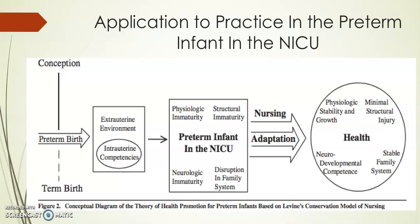Looking at the preterm infant in the NICU, they can have physiological immaturity which causes a threat to balance of energy. For example, the lungs of a preterm infant are one of the final organs to reach maturity, so preterm infants can have inadequate production of surfactant and structural inadequacy of lung tissue. There is also structural immaturity which can threaten structural integrity, such as impaired barrier function of the skin and immature immune systems, which can increase the risk for infection.